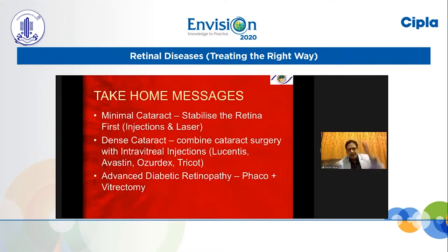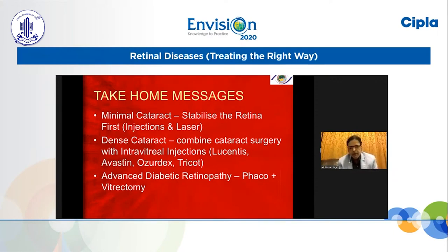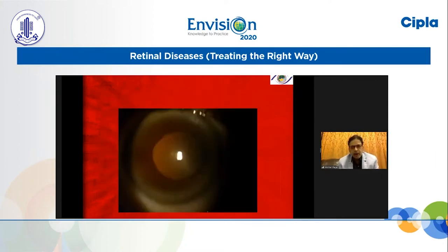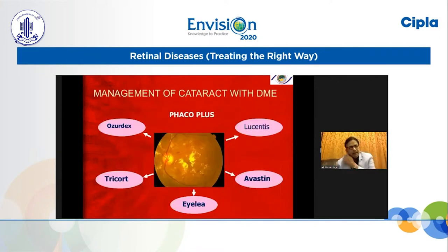Take-home message: For minimal cataract, stabilize the retina first — give injections and laser, then wait; don't be in a hurry for cataract surgery. After 3 months you can probably proceed. For dense cataract, combine cataract surgery with intravitreal injections — either anti-VEGF (Lucentis, Avastin) or Ozurdex or triamcinolone. For advanced diabetic retinopathy, perform phaco combined with vitrectomy with gas or oil, whatever is comfortable and necessary depending on severity. For management of cataract with DME: phaco plus Lucentis, or Eylea, or Avastin, or triamcinolone, or Ozurdex — these are the various options in your armamentarium.